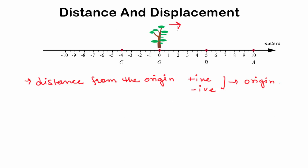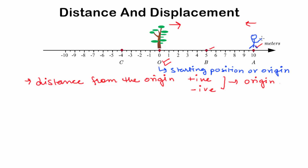At t equals 5 minutes, he covered a distance of 10 meters and then starts moving towards the left. Now at t equals 8 minutes, he is at a distance of 5 meters from the origin. We will now mark the positions of the man at two given instants of time. Here O is the origin — this is the starting position of the man. At t equals 5 minutes, the man is at 10 meters from the origin. He then starts moving towards the left, and at t equals 8 minutes, he is at 5 meters from the tree or origin. This position is represented by point B.